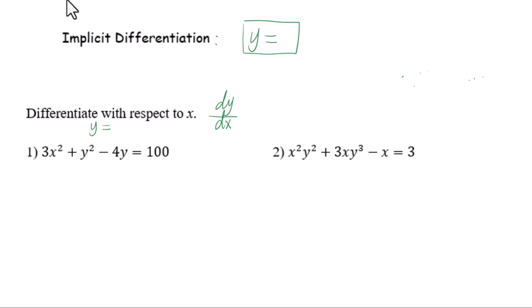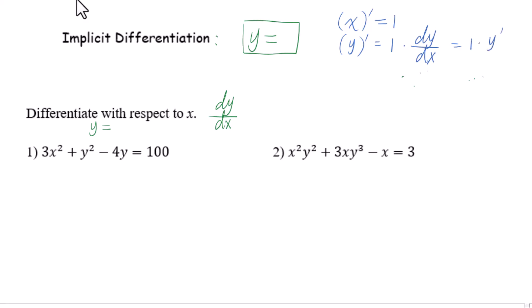When you use implicit differentiation, if you have x prime, that equals 1. But for y prime, you will get 1 times dy by dx, or you can write it as 1 times y prime.